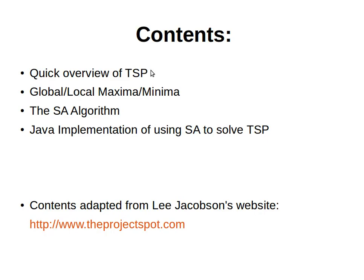In this video we'll have a brief overview of the traveling salesman problem. I have a separate tutorial that explains the TSP problem in slightly more detail — you can find it on my YouTube channel. We will also have a quick overview of what global and local maxima and minima are: when we have a solution and evaluate it — for example, for the TSP one solution would be a tour and the value would be the distance of that tour — and what the curve looks like when we plot solutions against their cost.